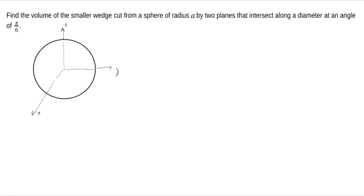In this example, we're asked to find the volume of a wedge cut from a sphere by two planes. The radius of the sphere is assumed to be some number A, that's a positive constant, cut by two planes that intersect along a diameter at an angle of pi over 6.